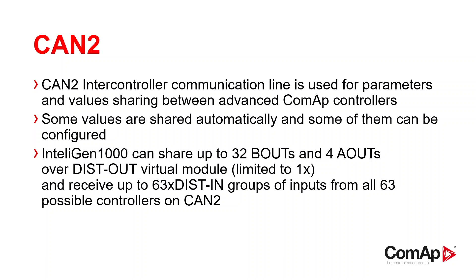The Intelligent 1000 can share up to 32 binary outputs and 4 analog outputs over the dist.out virtual module. The number of these modules is limited to 1 for each controller, and it takes the index of the controller address. Each controller can receive up to 63 dist.in groups of inputs from all other 63 possible controllers on CAN2, meaning 63 times 32 binary inputs and 63 times 4 analog inputs.